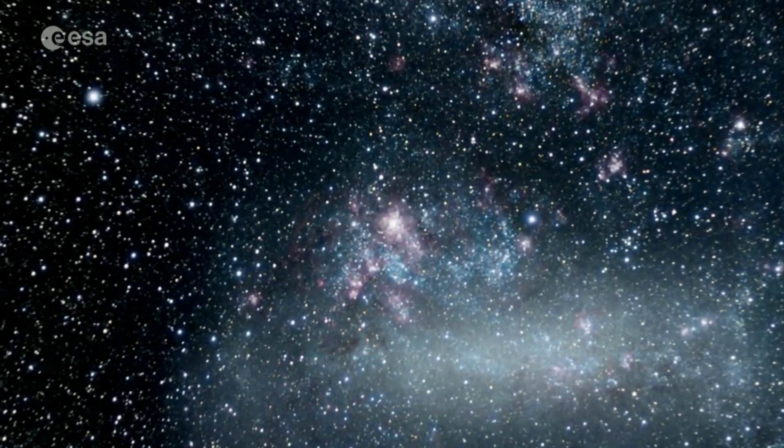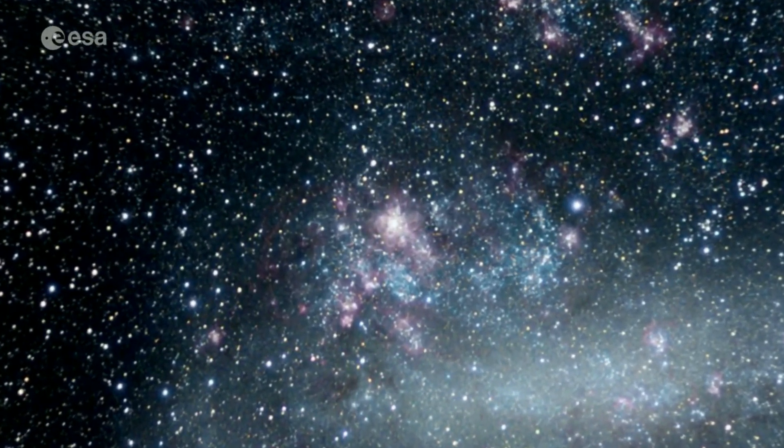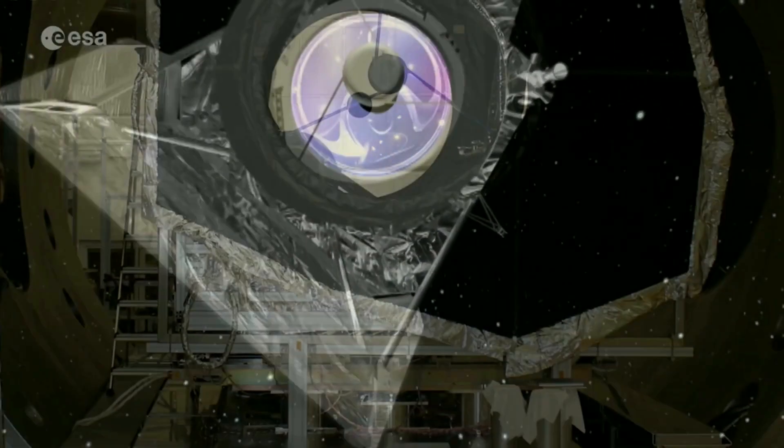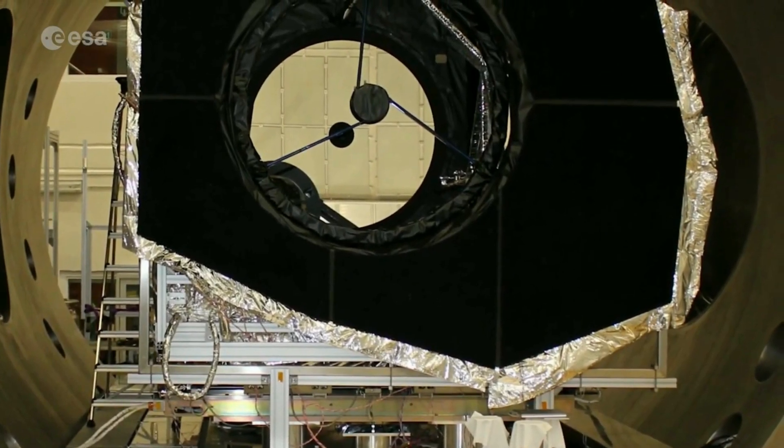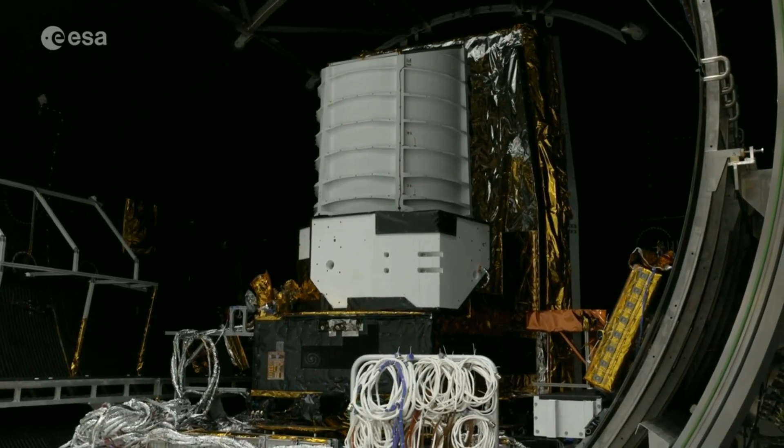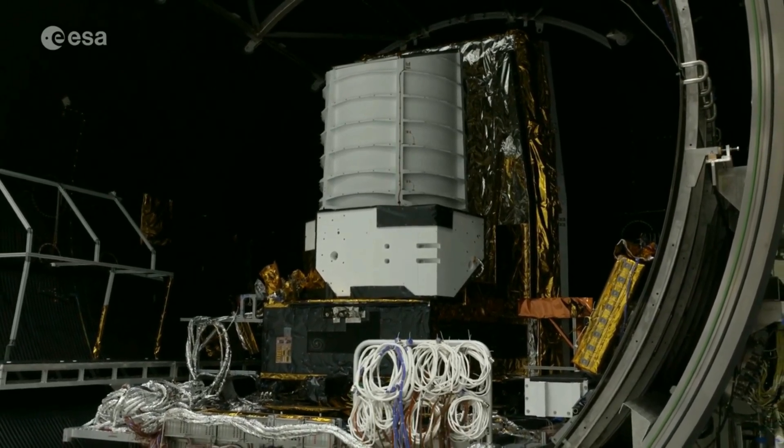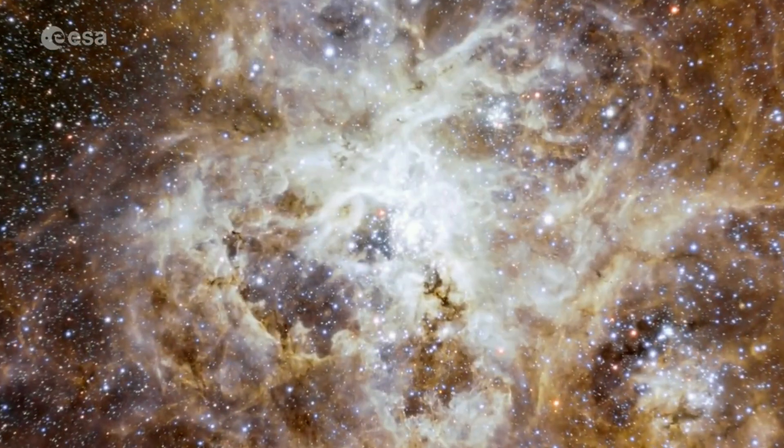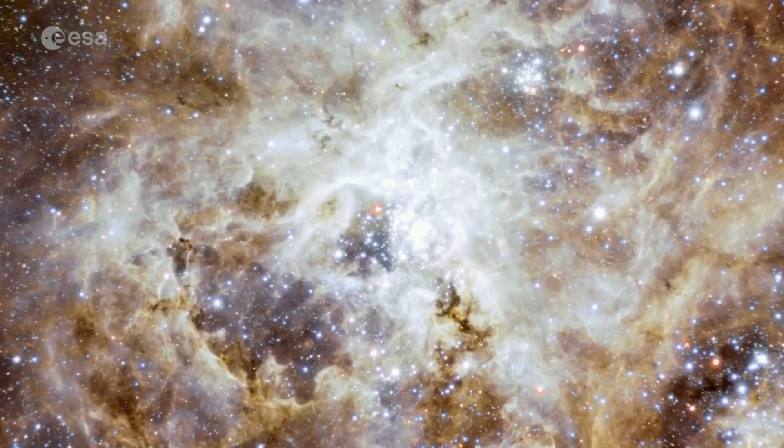Euclid, named after the ancient Greek mathematician, is a space telescope mission led by the European Space Agency, ESA. Its primary objective is to unravel the secrets of dark matter and dark energy, two enigmatic cosmic entities that hold the key to understanding the fundamental nature of our universe.